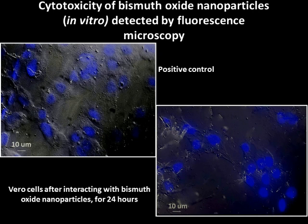The cytotoxic effect of bismuth oxide nanoparticles was evaluated in monkey kidney cells, also known as Vero cells, by fluorescence microscopy. The results show that bismuth oxide nanoparticles do not promote a cytotoxic effect in Vero cells when they are exposed for 24 hours.